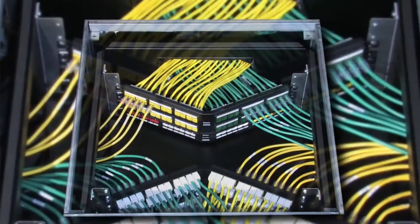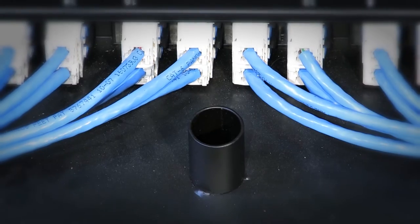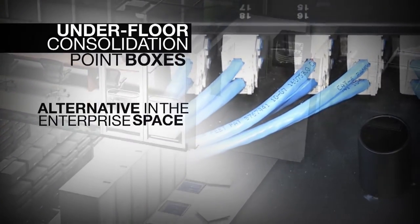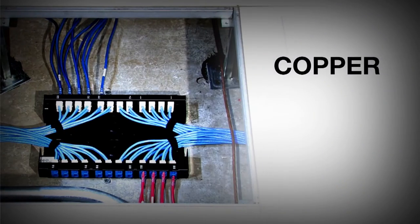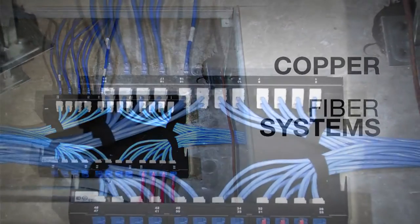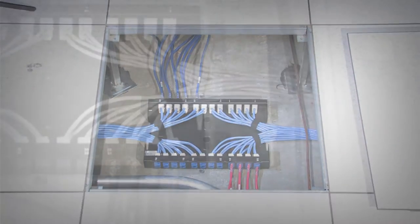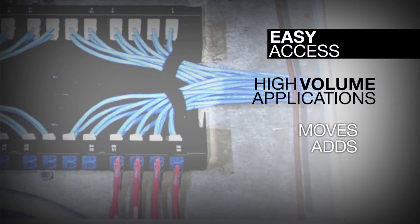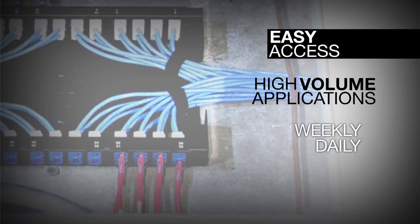With the increased use of raised floor designs, underfloor consolidation point boxes can be used as an alternative in the enterprise space. These are available in both 24 and 48 port versions for both copper and fiber systems. The enclosures can also be wall-mounted for easy access to high volume applications in which multiple moves, adds, and changes are made on a weekly or even daily basis.